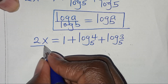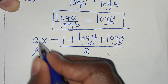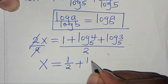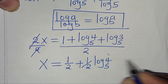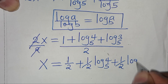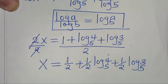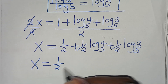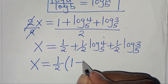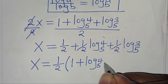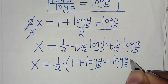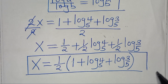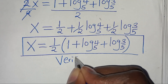The next step from here, let's divide both sides by 2, so that now we have x is equal to 1/2 plus 1/2 log 4 to base 5, then plus 1/2 log 3 to base 5. Since 1/2 is common, we can factor out 1/2, so that now we have x equals 1/2 into the parentheses: 1 plus log 4 to base 5, then plus log 3 to base 5. This is the value of x. So let's verify that this value of x satisfies the equation.